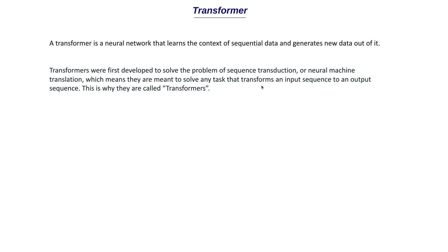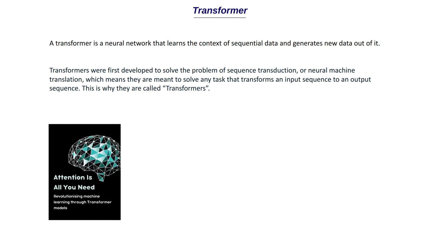Transformers became widely known with the launch of the paper 'Attention Is All You Need,' published by a group of scientists from Google, where they used transformer models for basic translation tasks. Before the introduction of transformers, we relied heavily on recurrent neural networks for NLP tasks like text classification and translation. Once transformers came along, they performed significantly better than RNNs across many tasks.